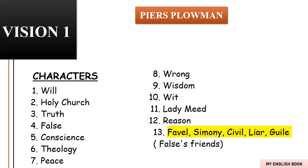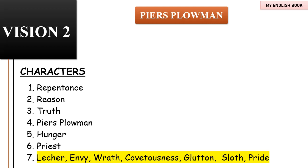Vision Two: Will is now in his second dream. He sees one by one the seven deadly sins make their confession to Repentance — the names of the seven deadly sins are highlighted on your screen. Repentance prays for the group's sins, inspiring a crowd of a thousand people to change their ways. The crowd searches for Truth. Will drifts back to sleep momentarily, and then sees Reason standing before the people, but the crowd has no idea where to find Truth.